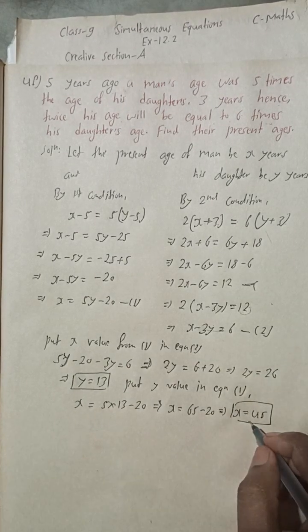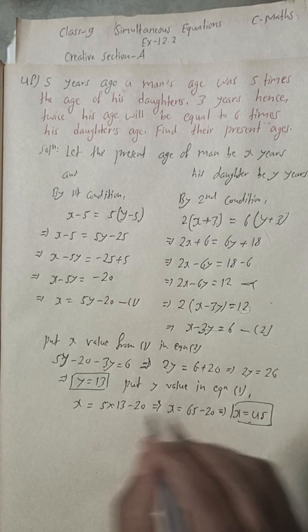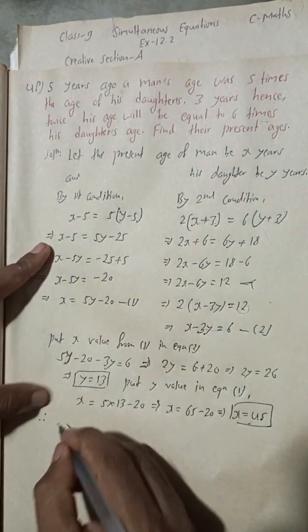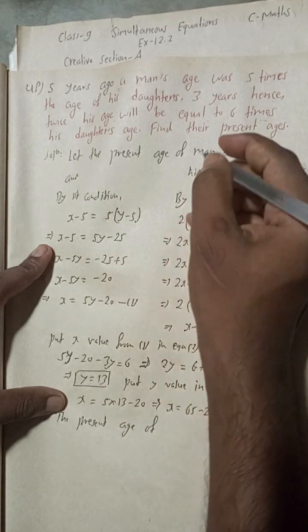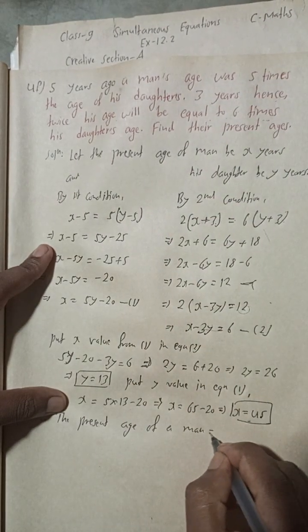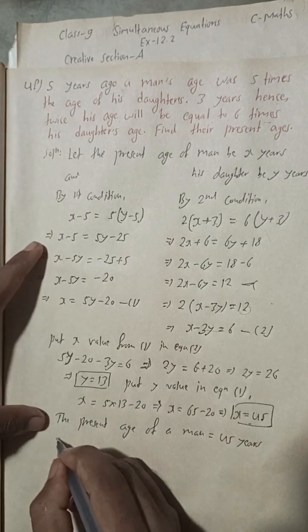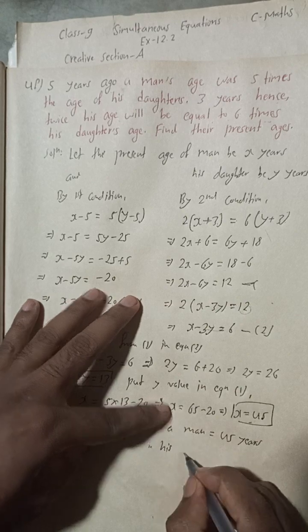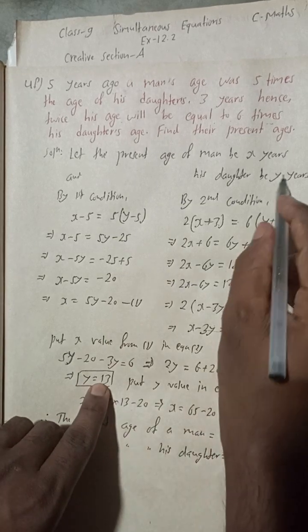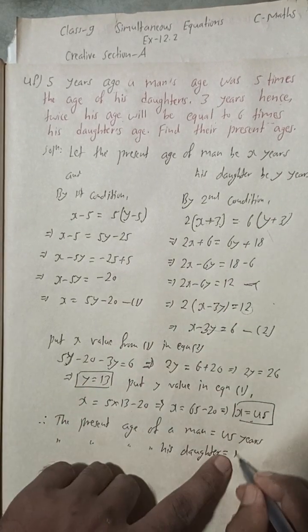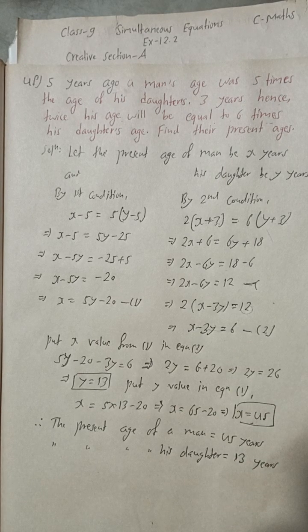This is the answer for question 4F. Therefore, the present age of the man is x = 45 years, and the present age of his daughter is y = 13 years. The required answer is 45 years and 13 years.